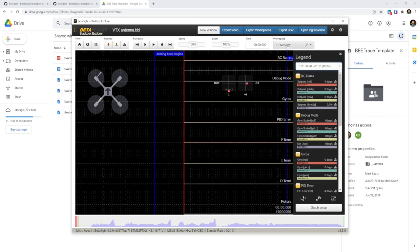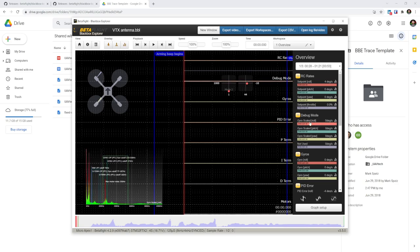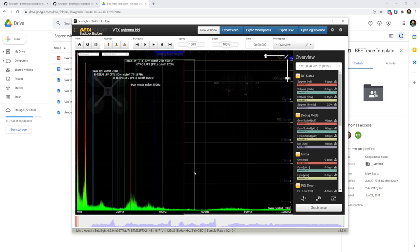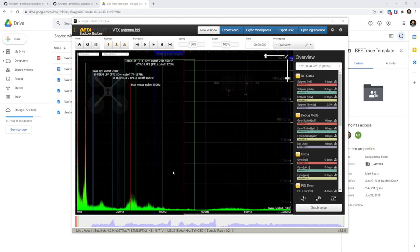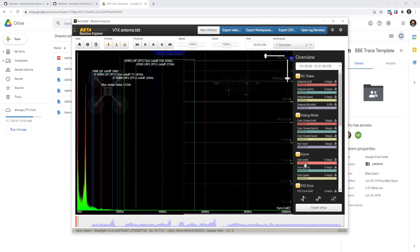In the workspaces tab you should select overview and then you can click on gyro scaled roll and that should bring up this little box here which you can then expand to full screen and you can also click on gyro scaled pitch and gyro scaled yaw. The gyro scaled is the signal before any filtering has taken place so it won't respond to you changing your filter settings very much. If you want to see what the signal looks like after filtering that's the gyro signal and that will be sensitive to how your filters are set.